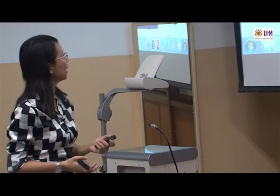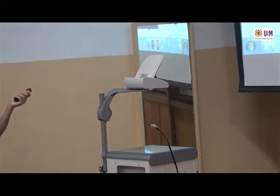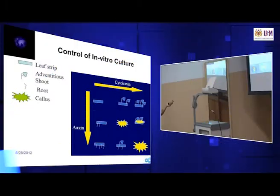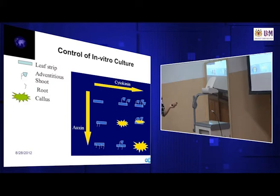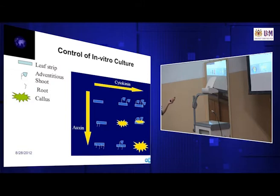Now let's look at the concentration of auxin and cytokinin — this is just a cartoon example. As auxin concentration increases, we get a lot of roots. If the concentration of cytokinin increases, we get a lot of shoots. But if the concentration of cytokinin and auxin are the same, we're going to have callus.